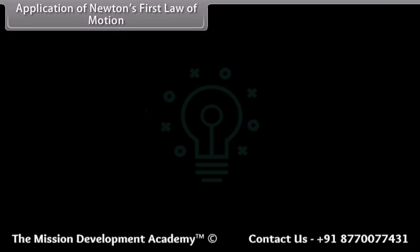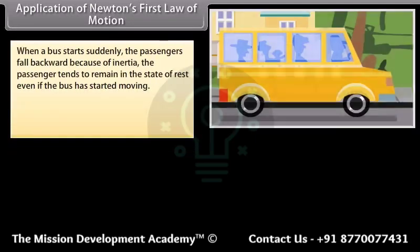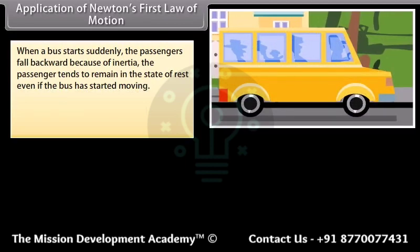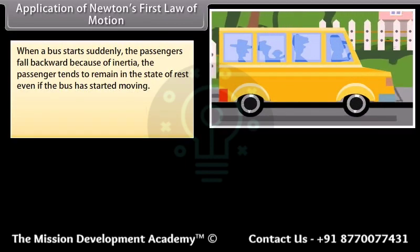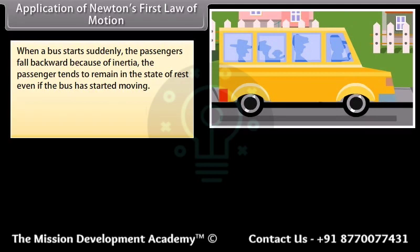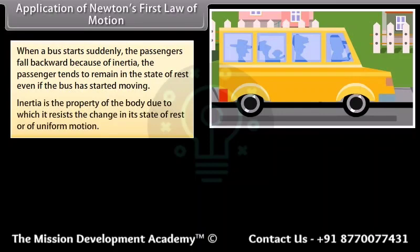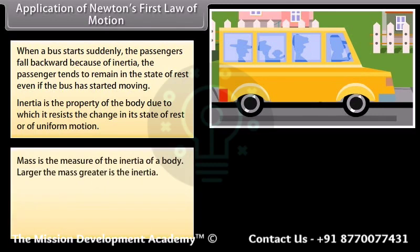Application of Newton's first law of motion. When a bus starts suddenly, the passengers fall backward because of inertia — the passenger tends to remain in the state of rest even if the bus has started moving. Inertia is the property of the body due to which it resists the change in its state of rest or of uniform motion. Mass is the measure of the inertia of a body; the larger the mass, the greater the inertia.